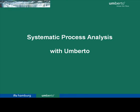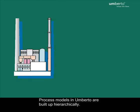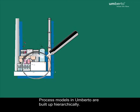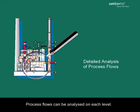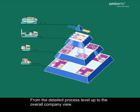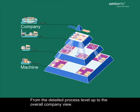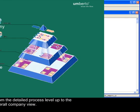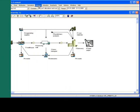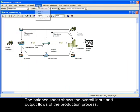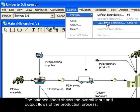The process models in Umberto can be built up hierarchically. This supports an analysis of the flows on each level, from the detailed process level up to the overall company view. Variations of model parameters on each level allow understanding the consequences for the whole system.